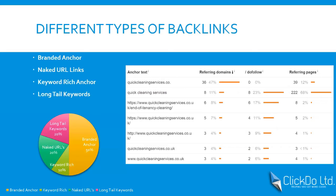When it comes to different types of anchors, we have branded anchor, naked URL, keyword-rich anchor, and long-tail anchor. A branded anchor means if you have a website called abc.com, you build backlinks using the brand name 'ABC.' Google loves such anchors because it's a positive signal that your website gets from different authoritative sources — directories, high-authority sites, or social media signals — all in your brand name.